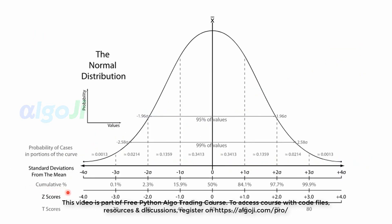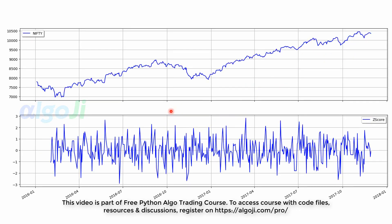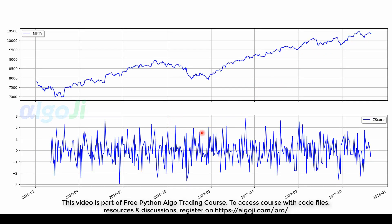The next indicator that we will study is the Z-score. A Z-score is nothing but the number of standard deviations the price goes away from its mean. So if prices go two standard deviations away from the mean, then the Z-score is plus 2. You may see that the Bollinger Bands and the Z-score are similar. When prices touch the upper Bollinger Band, it means that the Z-score is 2 or above. When prices touch the lower band, it means that the Z-score is 2 or less. This is how the plot of the Z-score looks. Now let us go ahead in coding and plotting these indicators.